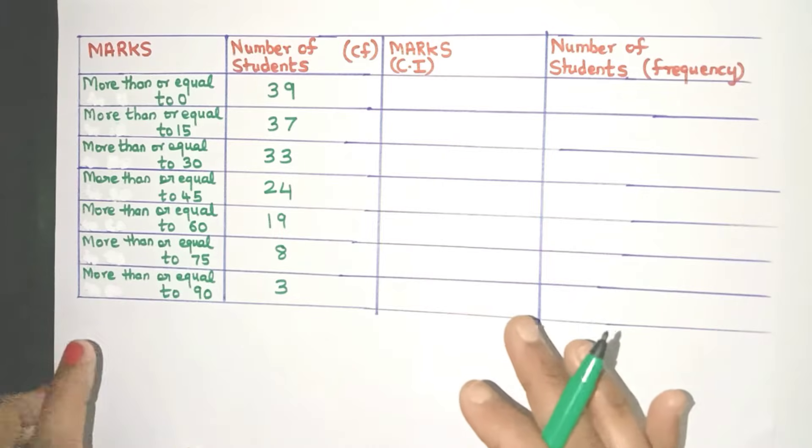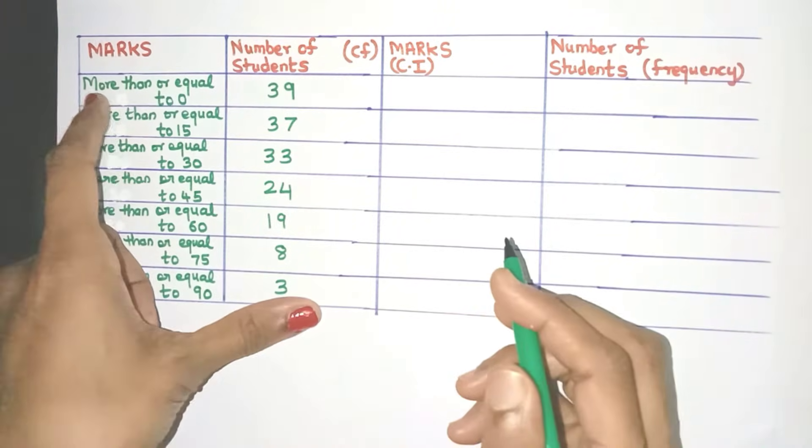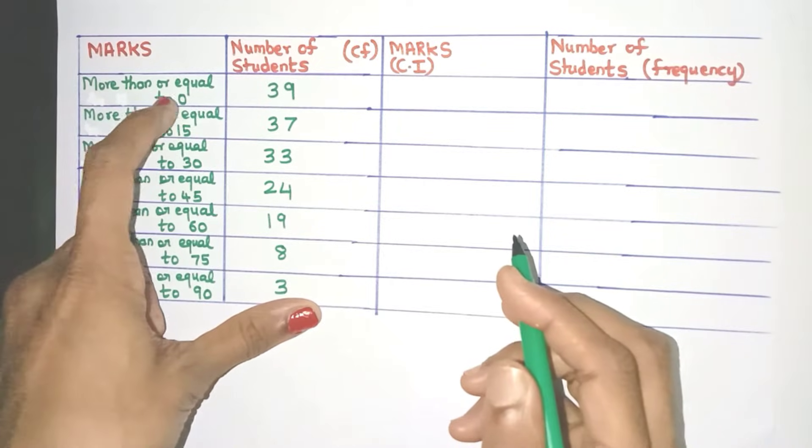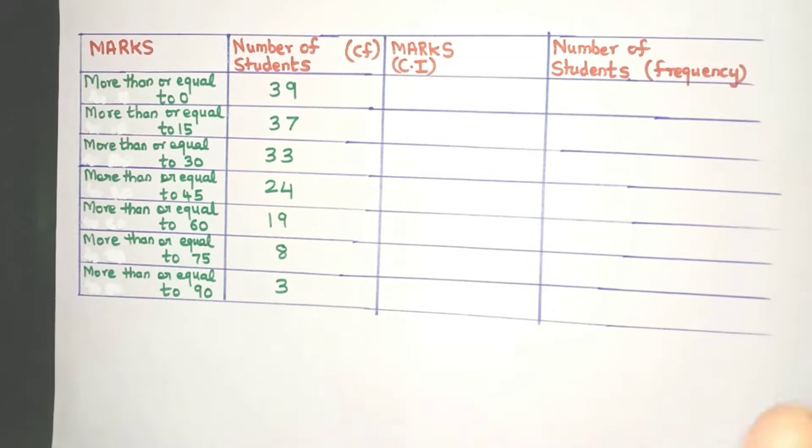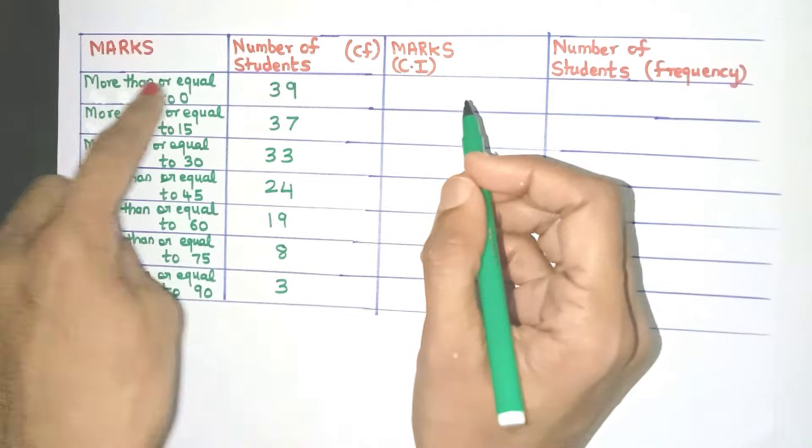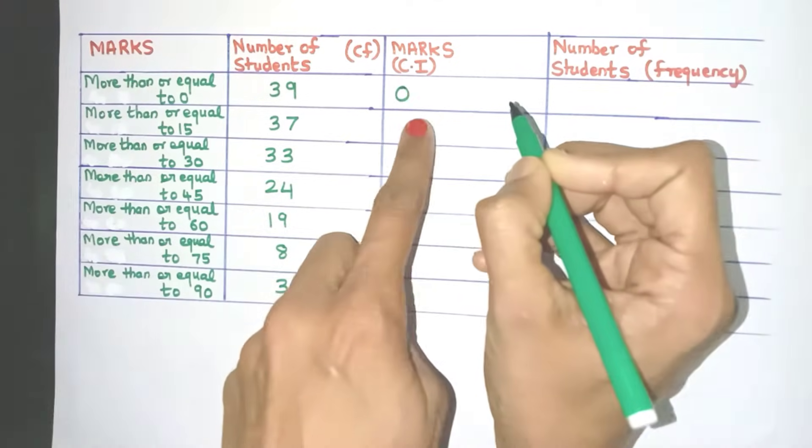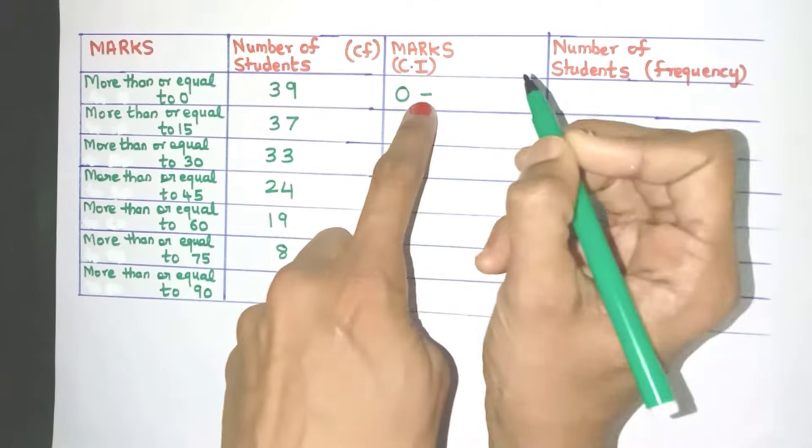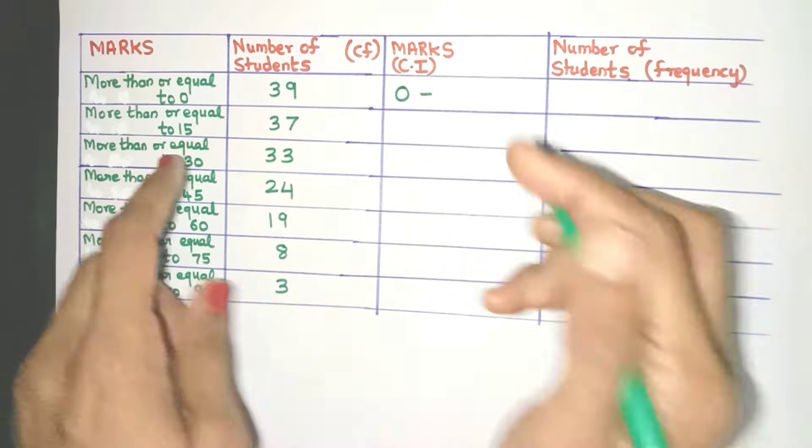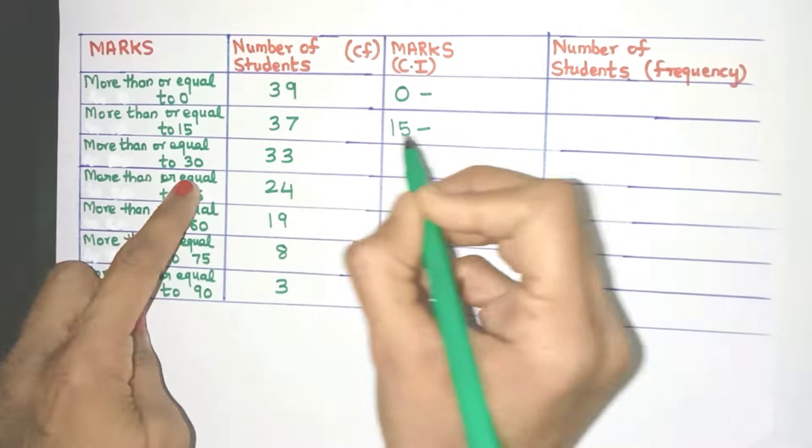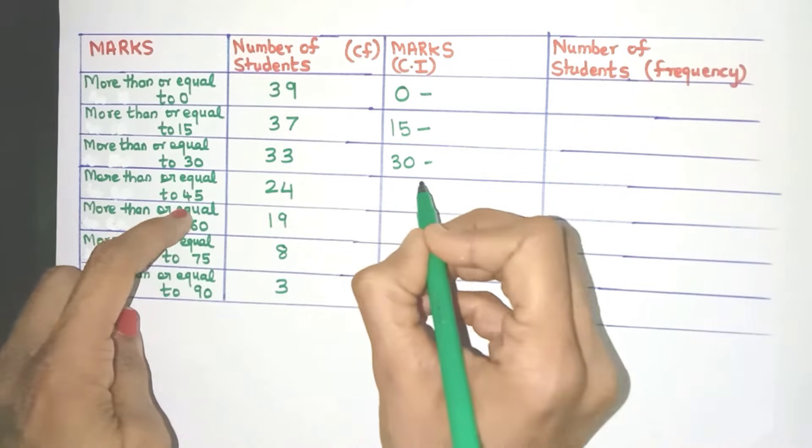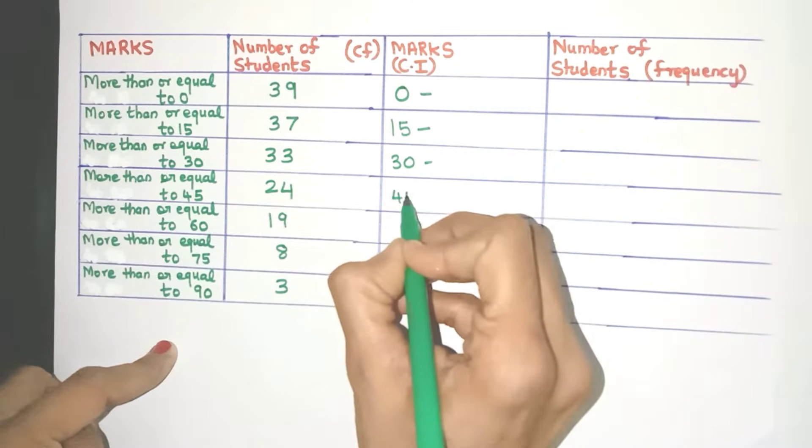Now in this example, we have cumulative frequencies of more than type. So friends, let's again see more than equal to 0. That means all these students have got marks more than or equal to 0. So can I say the lower class limit for this row has to be 0? Yes. So here it is 0 to some other limit. Here also see it's more than or equal to 15. So 15. This will be 30. So we can easily get all the lower class limits.